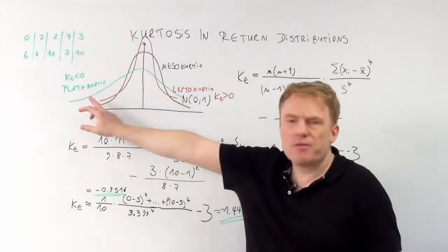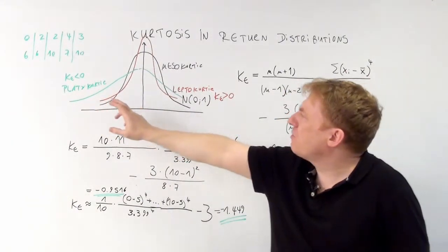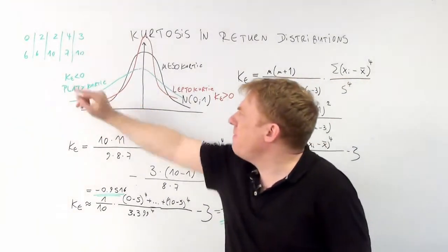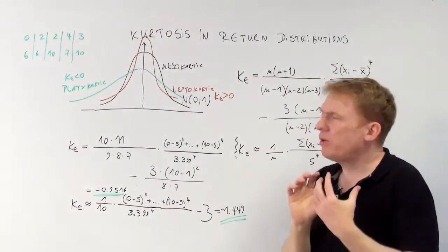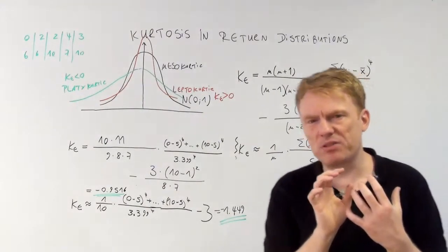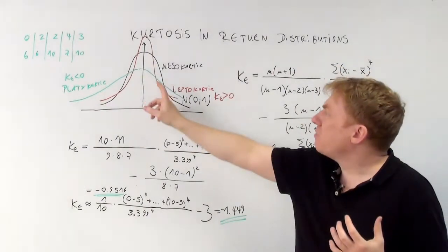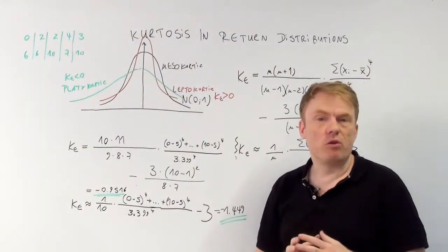Then we have the green curve, which is called platicurtic. K sub e is strictly less than 0. The green curve is less peaked than the standard normal distribution, whereas the red one is more peaked.